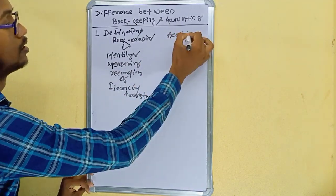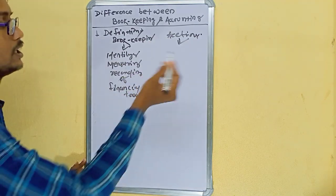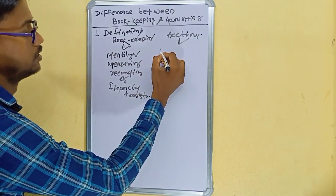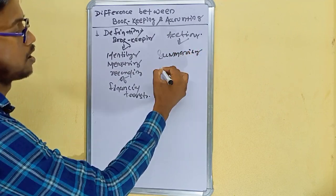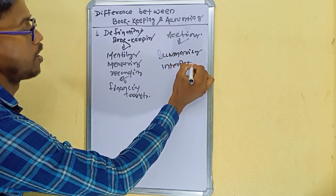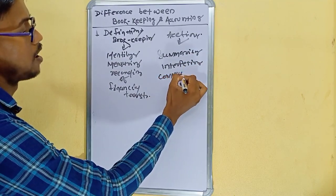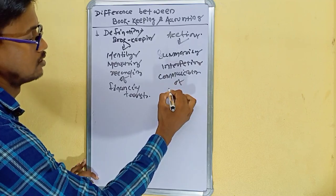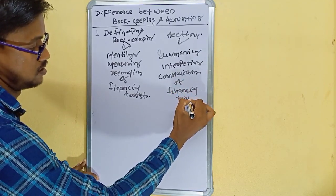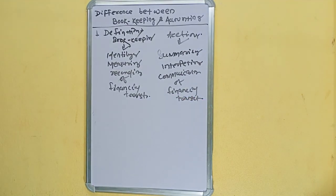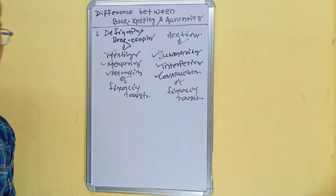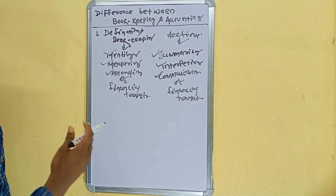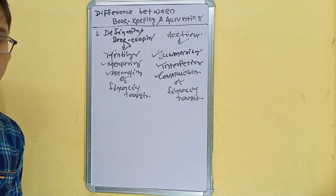What is accounting? Accounting involves summarizing, interpreting, and communicating of financial transactions. So in the definition term, bookkeeping involves identifying, measuring, and recording of financial transactions, while accounting involves summarizing, interpreting, and communicating of financial transactions. This is how bookkeeping is different from accounting.